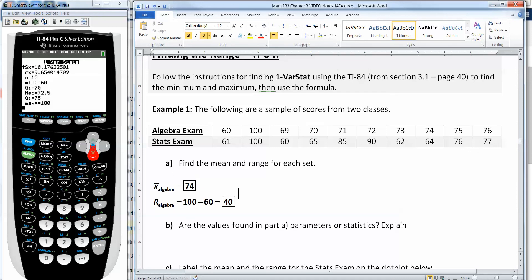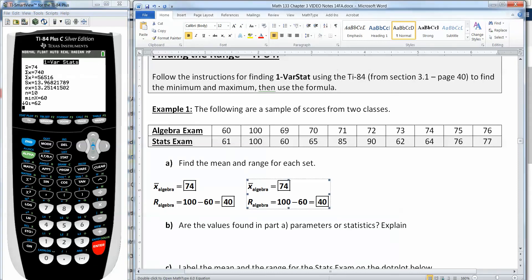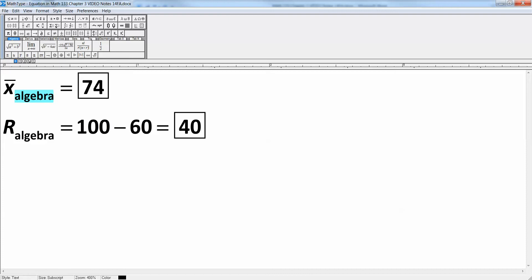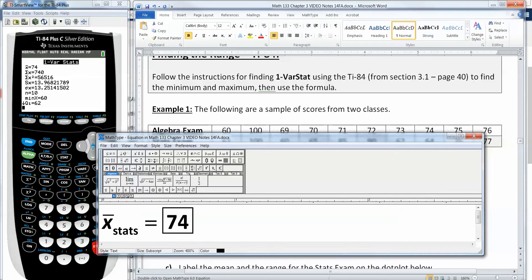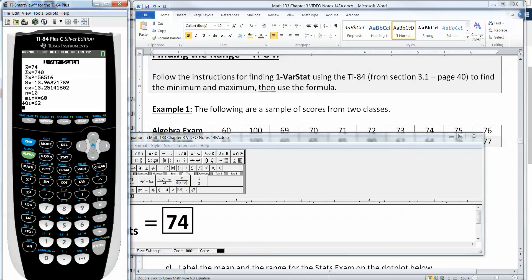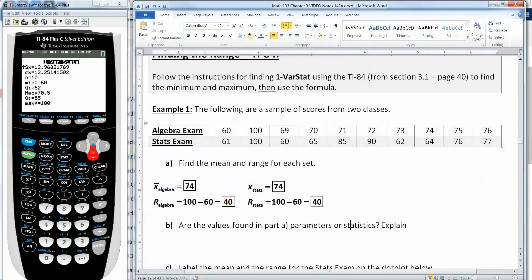Now I'm going to do that again for the statistics exam. I'm going to choose stat, then go to calculate, pick number one, and then I'm going to choose second two, and then go down to calculate and press enter. We can see the mean is still 74, so the mean of the stats exam is 74. The min was 60 still, and the max is still 100. So actually the range is the same for both data sets.